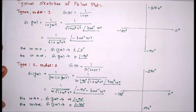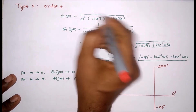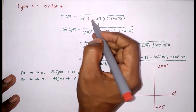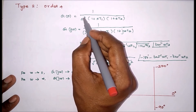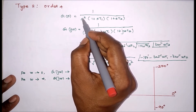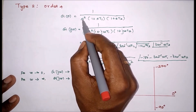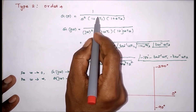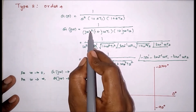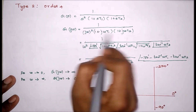In this video we are going to see the drawing of a polar plot for a Type 2, Order 4 system. There are two poles at the origin, meaning s², so it is Type 2. The maximum power of s equals 4 (s² × s × s = s⁴), therefore this is a Type 2, Order 4 system. As usual, we substitute s = jω into the equation.